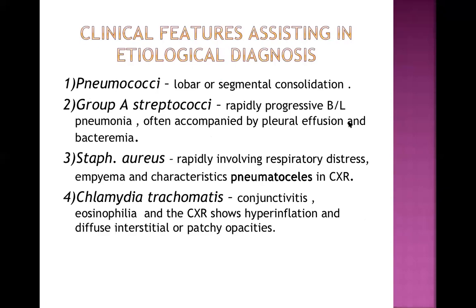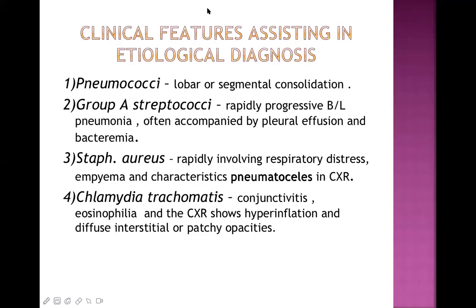Clinical features assisting in etiological diagnosis depend on the causative organism. If pneumococci is the causative agent, there will be lobar or segmental consolidation — one lobe or more of the right or left lung is uniformly involved. Group A Streptococci can lead to rapidly progressive bilateral pneumonia often accompanied by pleural effusion and bacteremia, considered a more severe type because the infection can quickly spread outside the lung. This pleural effusion is known as para-pneumonic effusion, which is exudative in nature.